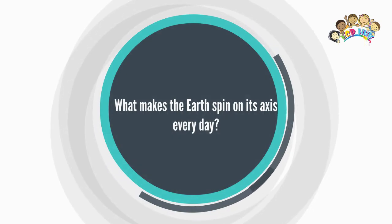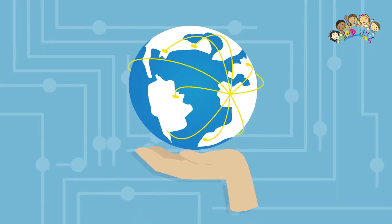What makes the Earth spin on its axis every day? To answer this tricky question, we have to look back in time to when the Earth was born 4.5 billion years ago. We have to ask, why did the Earth start spinning in the first place?